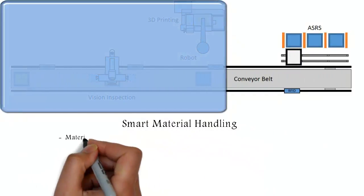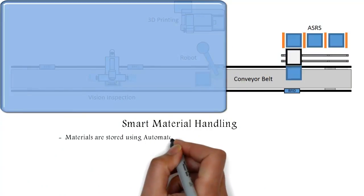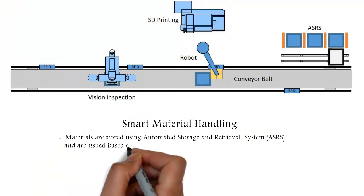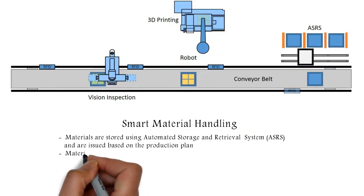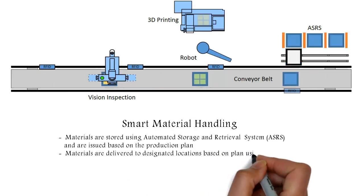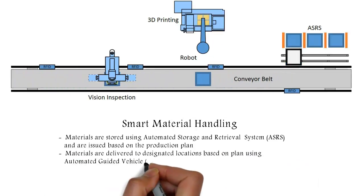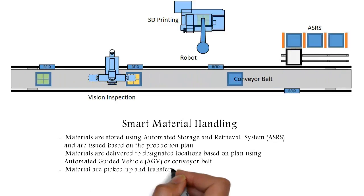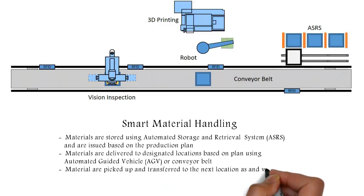Smart material handling: Materials are stored using automated storage and retrieval system and are issued based on the production plan. Materials are delivered to the designated location based on plan using automated guided vehicle or conveyor belt. Materials are picked and transferred to the next location as processed using automated guided vehicle or conveyor belt.